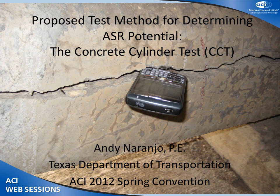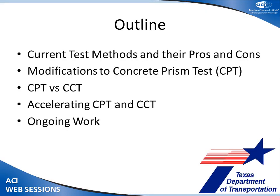I want to talk about some work we've been doing for the past year or so on a modification to basically the 1293 concrete prism test. I'm going to cover the current methods — basically 1260 and 1293 — because that's what we use in our lab. I'm going to talk about some of the modifications we've done to the prism test to see if we could improve on it, then some results on the prism test versus what I'm calling the concrete cylinder test, and then a little bit about accelerating both of those test methods.